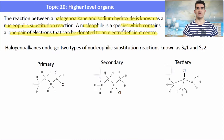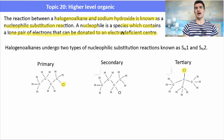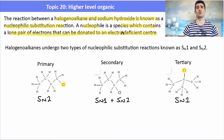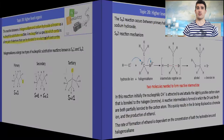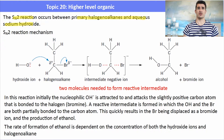The reaction between a halogeno alkane and hydroxide is known as a nucleophilic substitution reaction. A nucleophile is a species that contains a lone pair of electrons that can be donated to an electron-deficient carbon center. A primary halogeno alkane undergoes the SN2 mechanism to form the alcohol, and the tertiary halogeno alkane undergoes an SN1 mechanism. Secondary alcohols undergo both SN1 and SN2, and you won't be asked about the mechanism for that one.